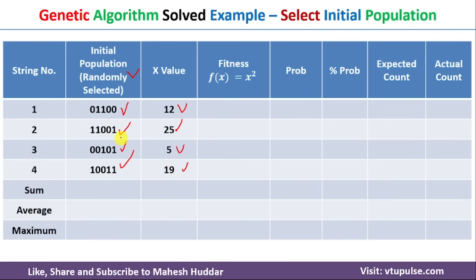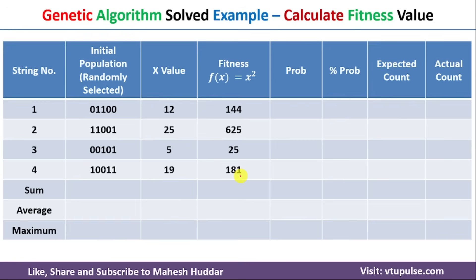Once we have the initial population, we apply the fitness function to get the fitness score for each solution. f(x) = x² is the fitness function. f(12) = 144, f(25) = 625, f(5) = 25, and f(19) = 361. The sum of fitness values is 1155, the average is 288.75, and the maximum is 625.